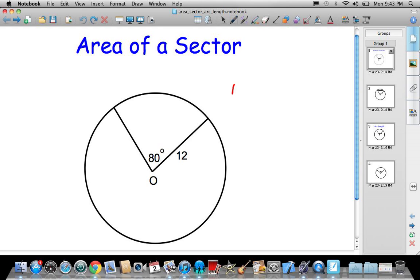The area of a sector is equal to theta divided by 360, so that's your fraction part of the circle or the percentage of the circle, times the area of a circle which is pi r squared. In this case we have a radius of 12, we have an angle of 80, so we just have to fill in this guy.